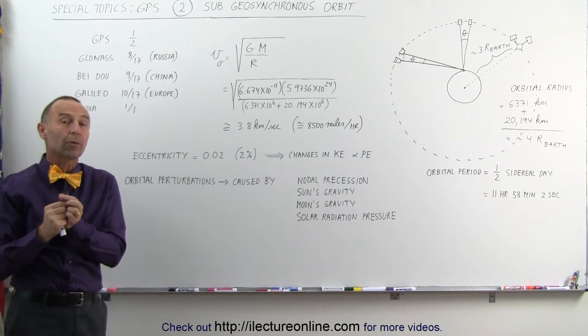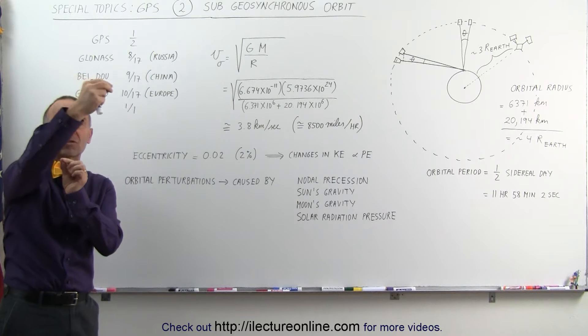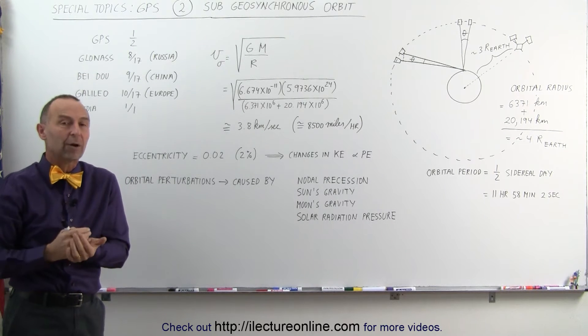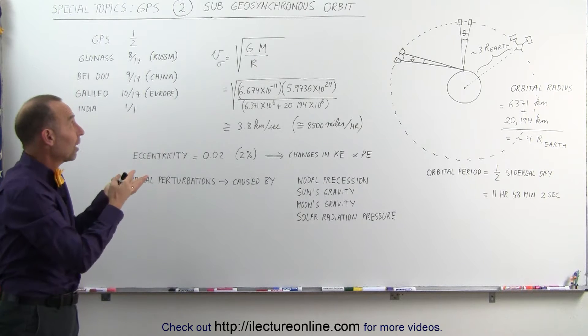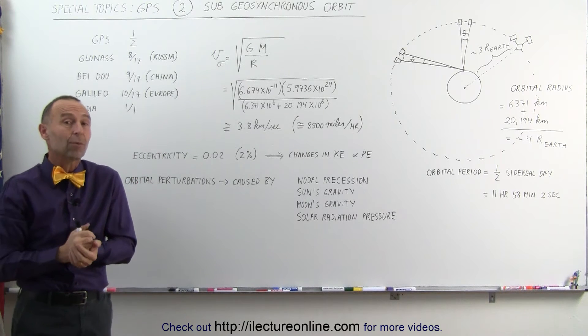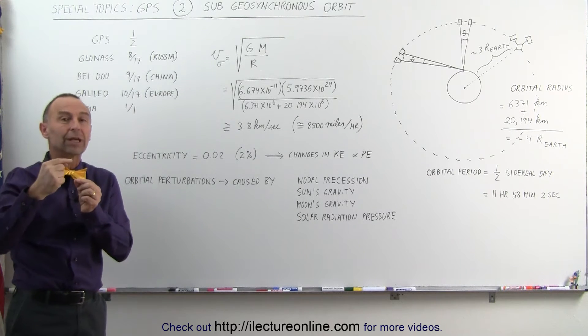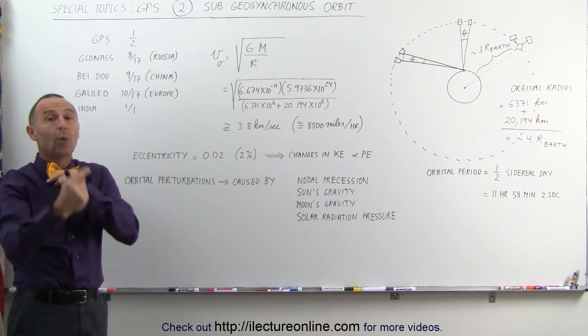In subgeosynchronous orbit, the satellites travel faster, which means that they will make a trip around the Earth in less than 24 hours, significantly less. And it turns out that with the GPS system that we have, the satellites make exactly two trips around the world in the time that it takes the Earth to make one rotation.